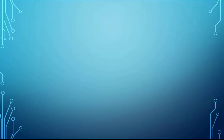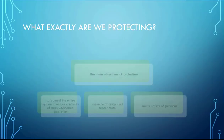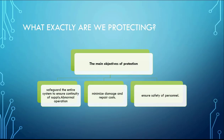What exactly are the main objectives of protection? To simplify, there are three: it is to safeguard the entire system, to ensure continuity of supply during abnormal operation, to minimize damage and repair cost — which is very important — and to ensure the safety of personnel. All three of these elements are very important.